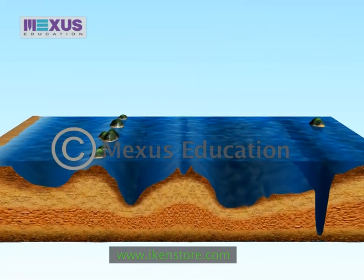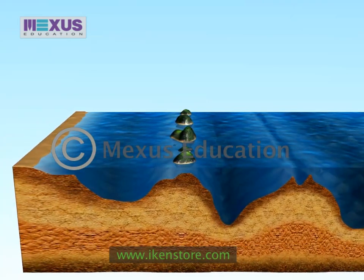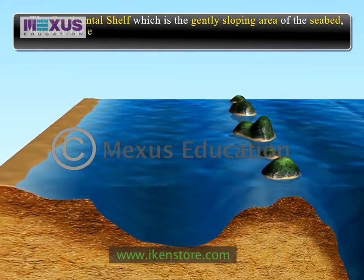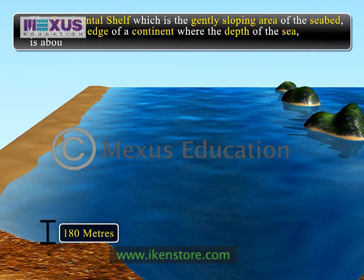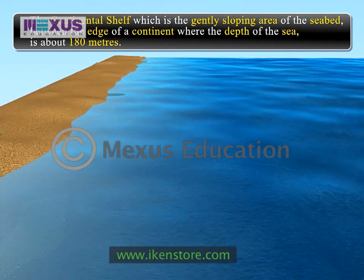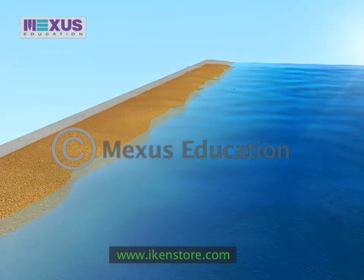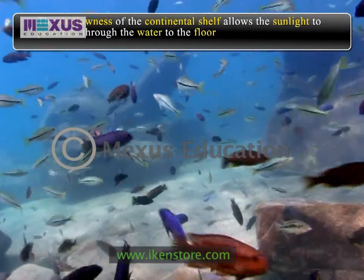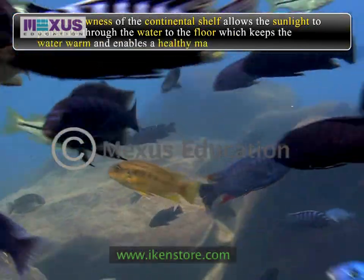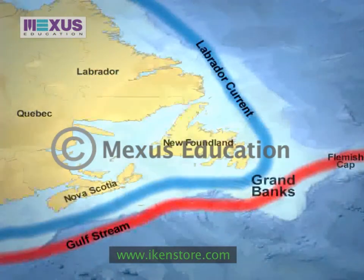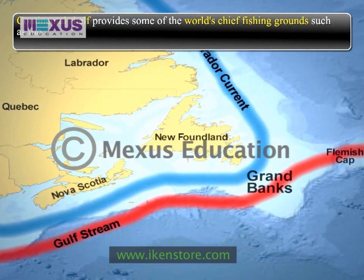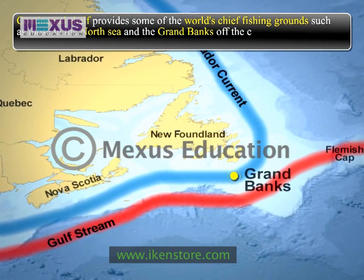The ocean floor may be divided into four parts. The first one is called the continental shelf, which is the gently sloping area of the sea bed between the edge of a continent where the depth of the sea is about 180 meters. It is a submerged extension of the continent formed due to the erosive action of the sea. The shallowness of the continental shelf allows sunlight to penetrate through the water to the floor, keeping the water warm and enabling healthy marine life. Hence, the continental shelf provides some of the world's chief fishing grounds, such as those in the North Sea and the Grand Banks off the coast of Newfoundland.